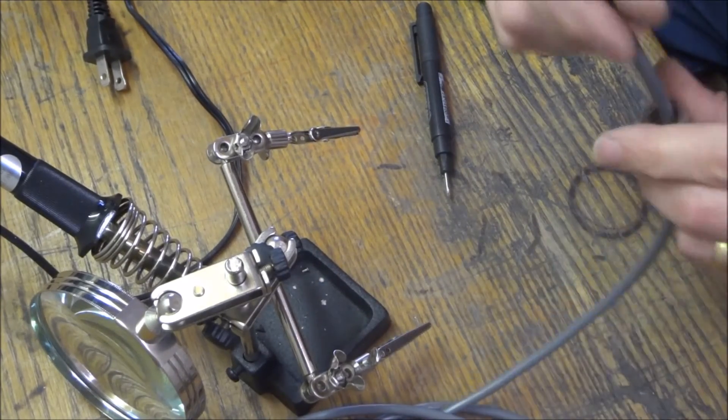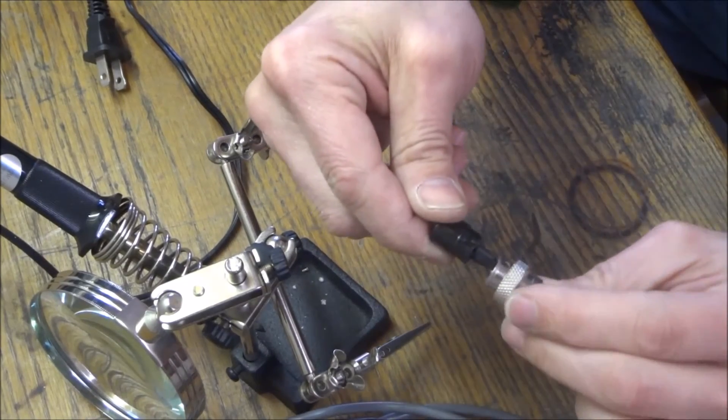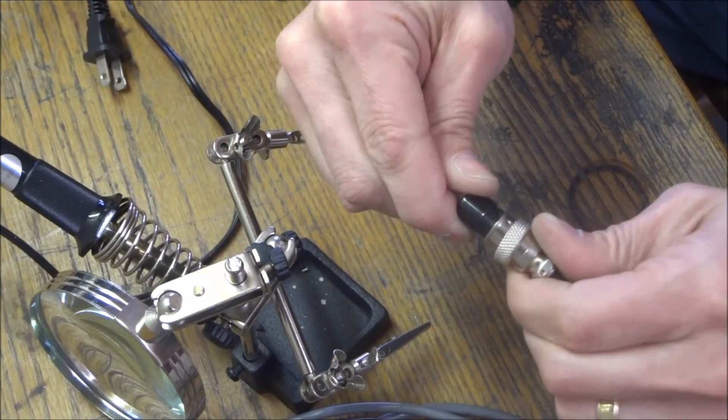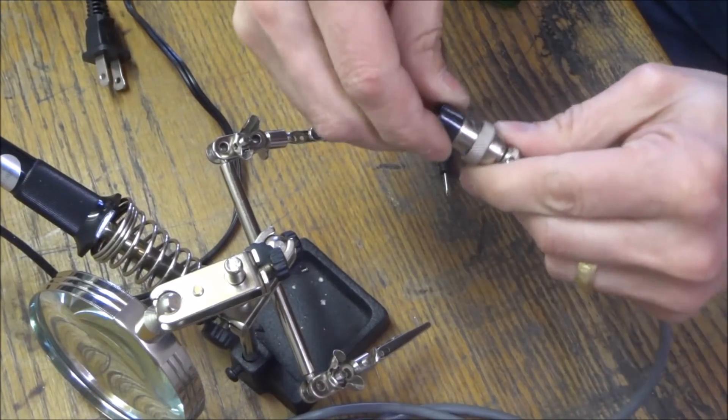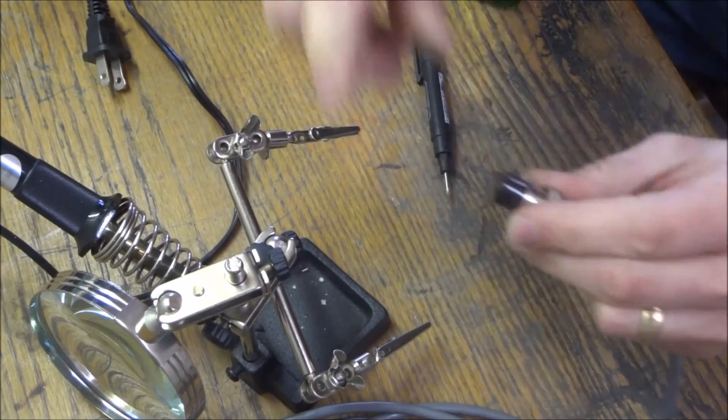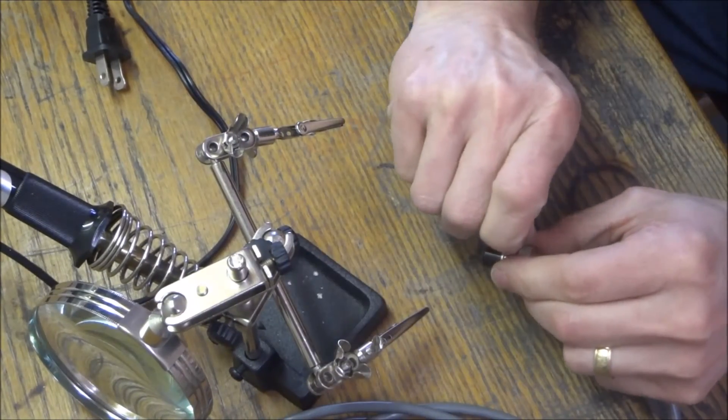Okay. Slide the end over. So you can kind of see the little lock mechanism here. Give it a turn. Line the hole up. Take your screw.